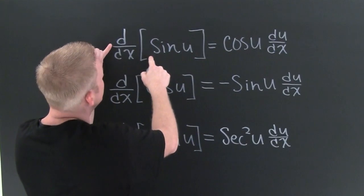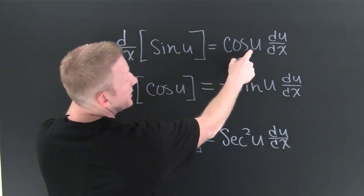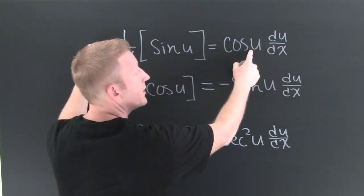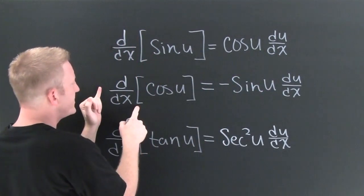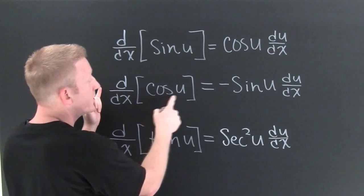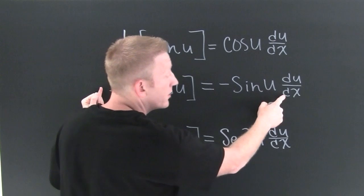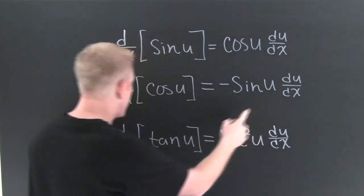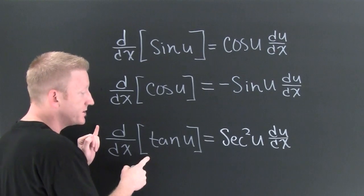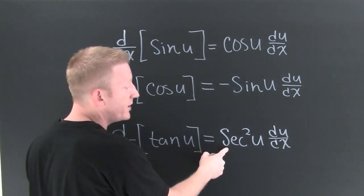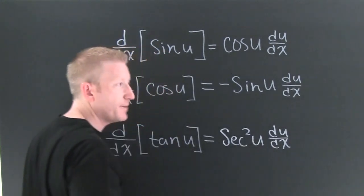I'm gonna need you to remember the sine. The derivative with respect to x of the sine of u is the cosine of u times the derivative of the argument with respect to x. The derivative with respect to x of the cosine of u is going to be equal to minus the sine of u times the derivative of the argument with respect to x. The derivative with respect to x of the tangent of u is going to be the secant squared u times the derivative of the argument with respect to x.